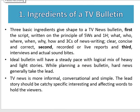What are the basic ingredients for a television bulletin? Three basic ingredients give shape to a television news bulletin. First, the script — written on the principle of five W's and one H: what, who, where, when, why, and how — and the three C's of news writing: clear, concise, and correct. Second, recorded or live reports. Third, interviews and actual sound bites.